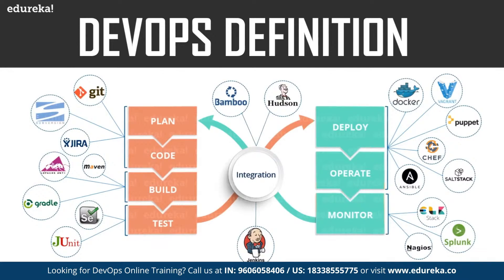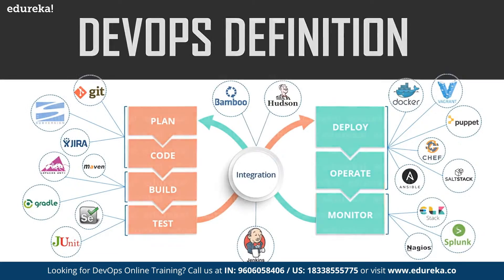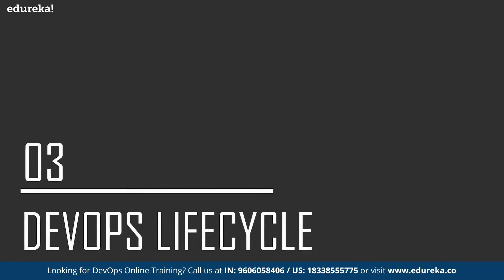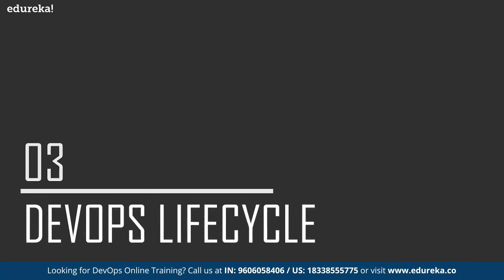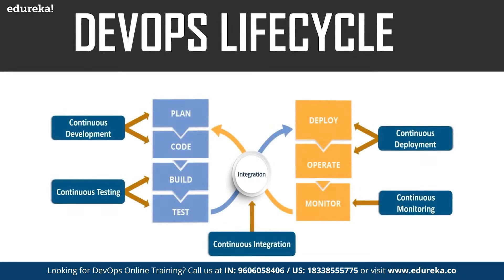As you can see in this diagram, these are the various tools used in DevOps. Now let us look at the DevOps lifecycle. As shown in the diagram, the various phases are continuous development, continuous testing, continuous integration, continuous deployment, and continuous monitoring. Let us look at each of these phases one by one.